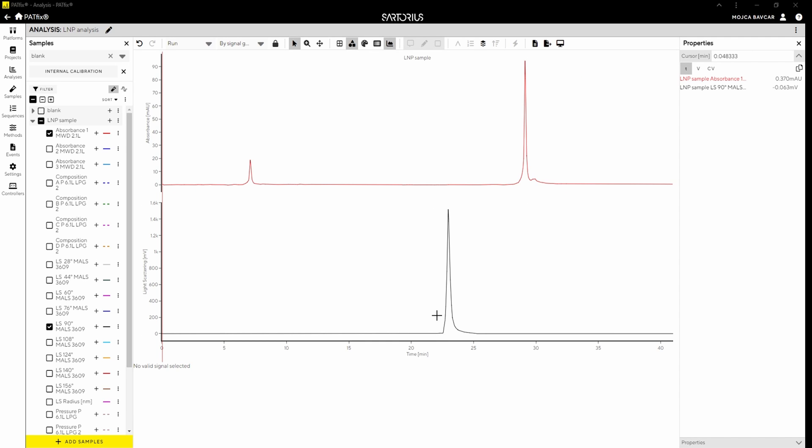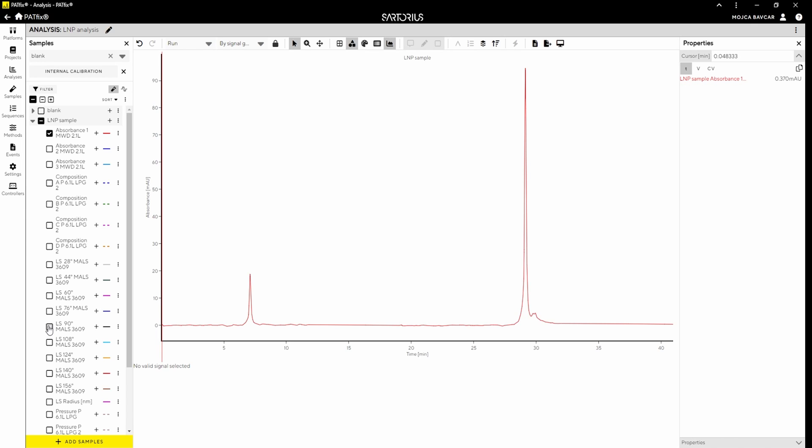In the light scattering signal, a peak is observed in the LMP elution section, when LMPs are eluted from the OH column. This signal allows for the estimation of LMP size. In this demonstration, we will focus on the information provided by the absorbent signal. A peak is observed in the first analysis, representing non-encapsulated mRNA, while the absorbent's peak in the second analysis corresponds to encapsulated mRNA.